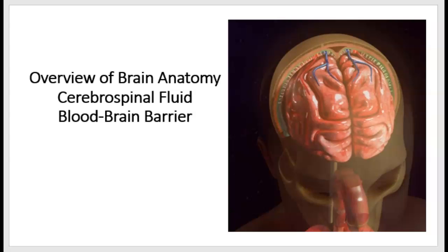Hello, this is Gina Piscitelli with a lecture for Anatomy and Physiology I at Madison Area Technical College. In this lecture, I will talk about the anatomy of the brain, just an overview. The second part covers cerebral spinal fluid that protects the brain on the outside and inside. And finally, the blood-brain barrier, which is a structure that protects brain tissue from harmful substances that might be present in the blood.